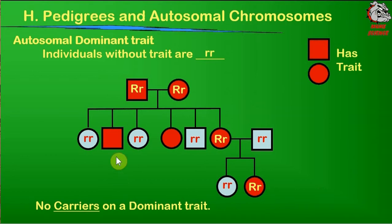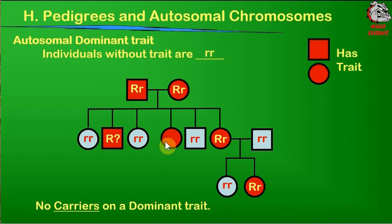That brings us to the last two: the second-born male and the fourth-born female in the second generation. What genotypes are they? They have the trait, so they have to have a big R, but I don't have enough information. I need another generation or more data to figure out their genotypes. They could be homozygous dominant — big R, big R — or heterozygous — big R, lowercase r. We don't know the complete genotype until we have offspring information. So two of these individuals, we really can't figure out their particular genotypes.